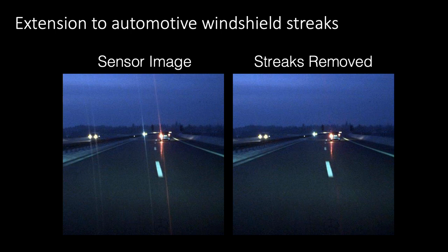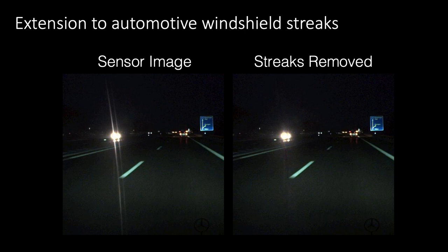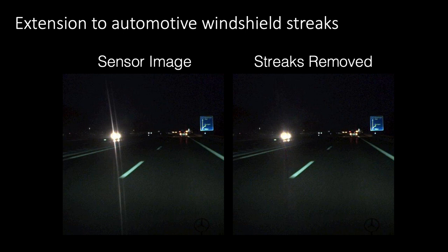As an extension, we can apply our network towards removing other types of streaks, such as streaks produced by dirt on windshields. In summary, we propose a snapshot HDR imaging technique using a jointly-learned diffractive optic and reconstruction network. Our technique handles dynamic scenes and outperforms state-of-the-art single-shot methods.